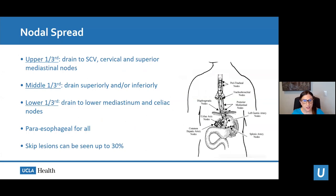Radiation oncologists are very interested in patterns of spread because that guides our treatment volumes. Upper one-third esophageal lesions typically drain to the supraclavicular, cervical, and superior mediastinal nodes. Middle esophageal cancers can drain either superiorly or inferiorly. Lower third lesions drain to the lower mediastinal and celiac nodes. All esophageal cancers drain to periesophageal lymph nodes, and skip lesions are seen frequently in this disease.